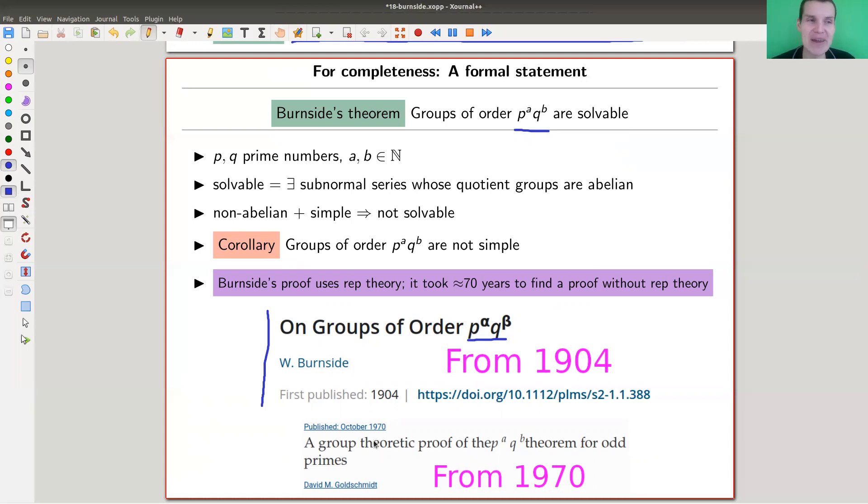Burnside's theorem basically says those groups are not simple. You can make a slightly stronger statement called solvability, but we can ignore this. The statement is: groups of those orders are not simple. In particular, you need at least three prime factors to find a simple group. For three prime factors, you will find a non-abelian simple group, the alternating group from my previous slide.